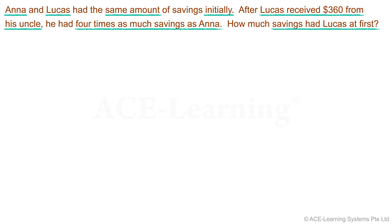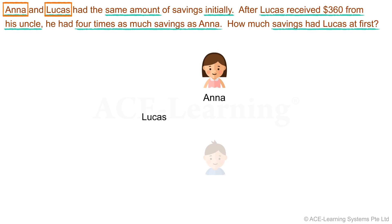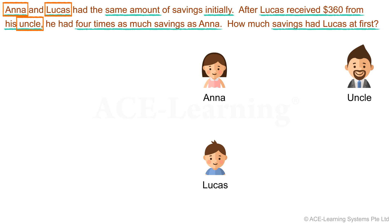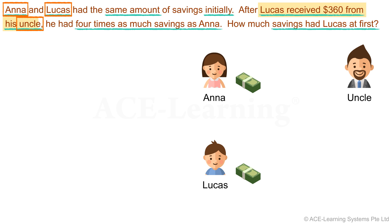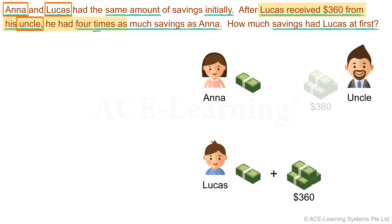Now, let us draw a diagram to illustrate the problem. Who are the people involved? We have Anna, Lucas, and Lucas's uncle. How are the three of them connected? Anna and Lucas had the same amount of savings at first. Lucas's uncle gave Lucas $360. As a result, Lucas's savings is now four times that of Anna's.